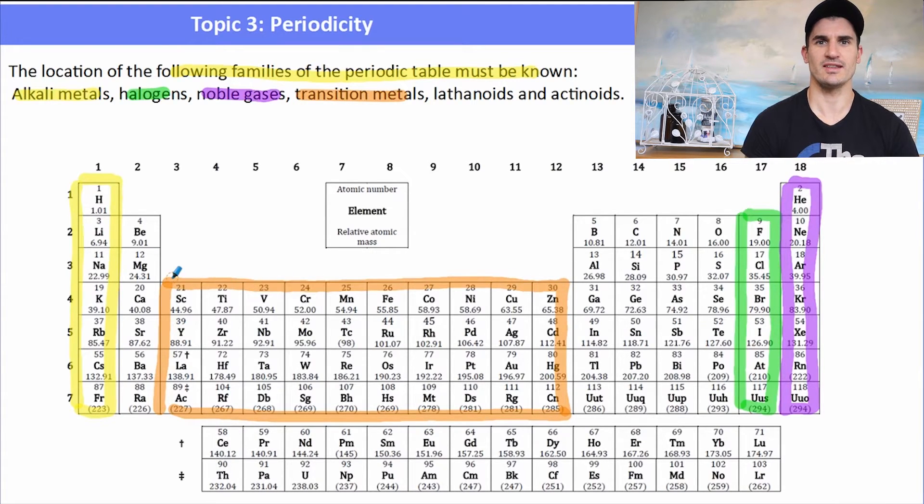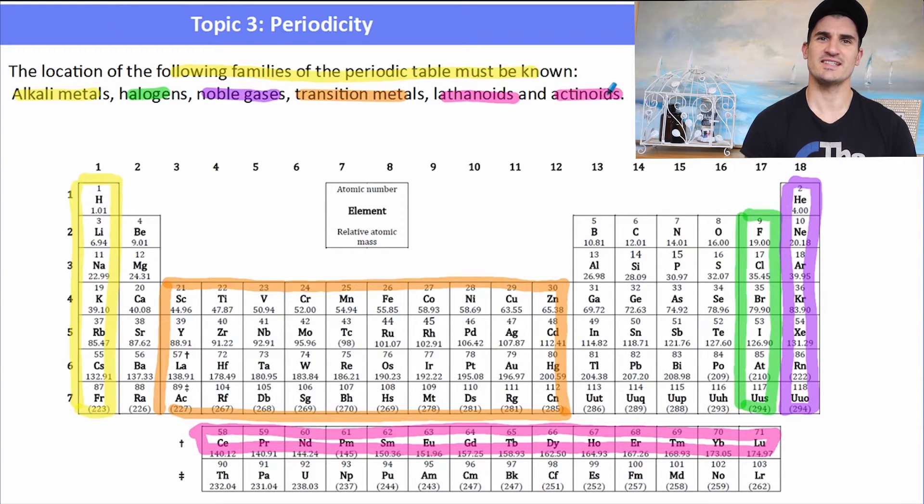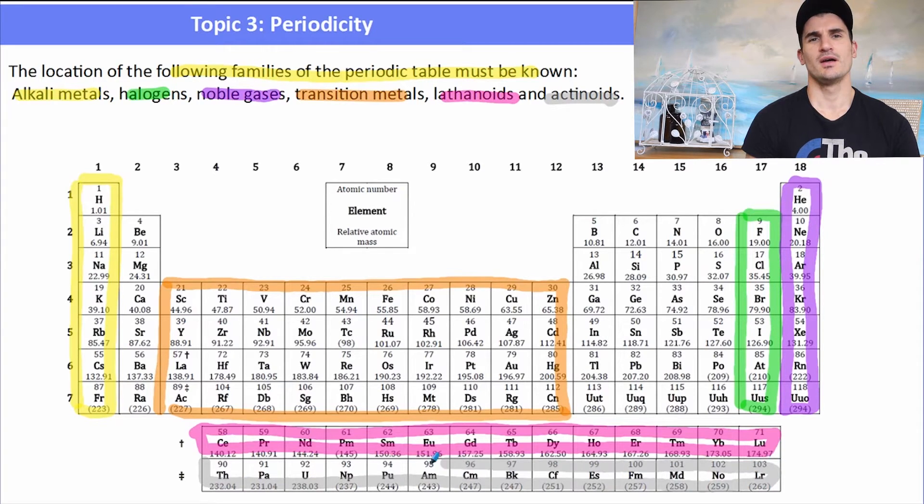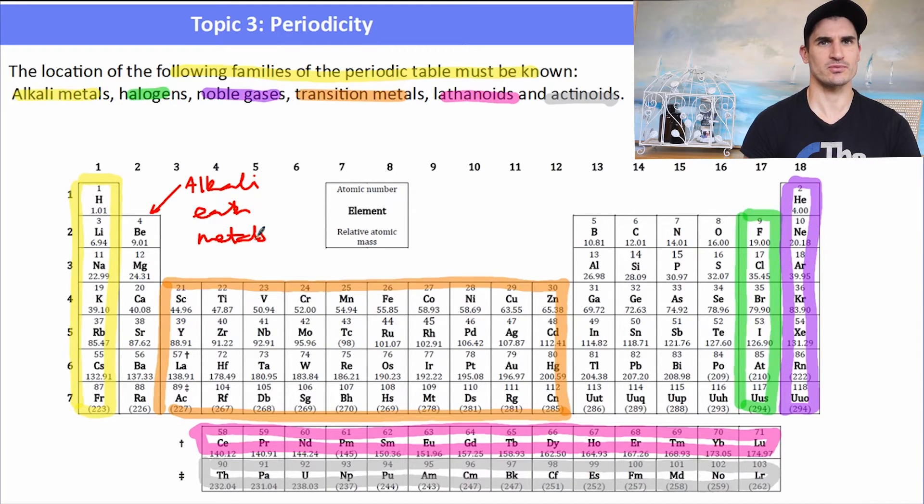The lanthanides - well, that's the first row of the F block elements, and the actinoids is the second row of the F block elements. Group 2 of the periodic table, although we may not need to know what it is, it's also another one that might come up. It's called the alkaline earth metals. So group 1 is the alkali metals, group 2 is the alkaline earth metals.